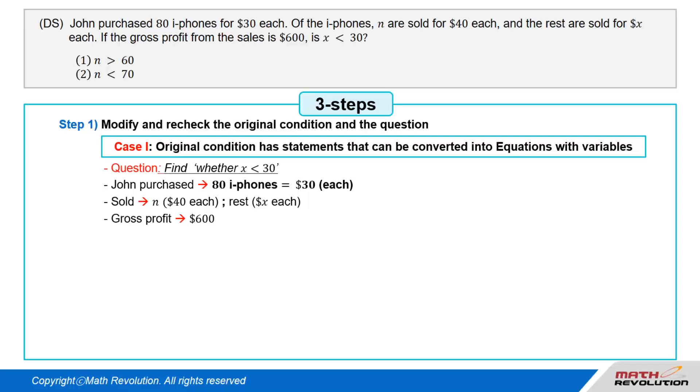We have to find out whether X is less than $30 if John purchased 80 iPhones for $30 each, and he sold N for $40 each, and the rest for X dollars each, resulting in a gross profit of $600. Now, total sales is 40 times N plus (80 minus N) times X, and total cost is 80 times $30, or $2,400.